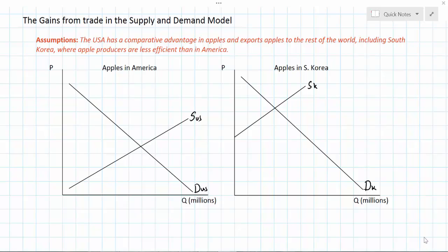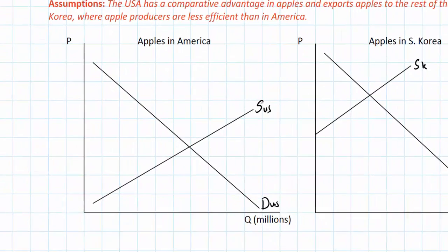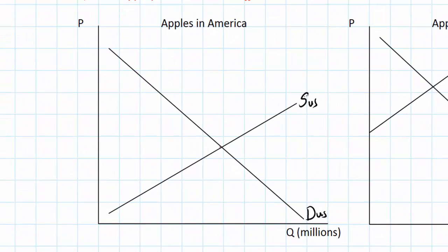We're looking at the market for apples in both the United States of America and South Korea. Our assumption is that the United States has a comparative advantage in apple production and exports apples to the rest of the world, including to South Korea, where apple producers are less efficient than in America. Our initial equilibrium price in both graphs assumes that neither country is trading with the rest of the world.